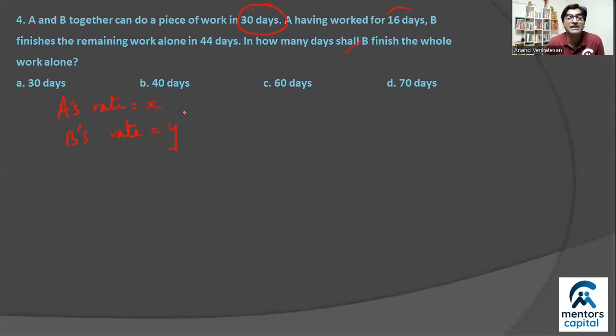So A and B if they work together, they take 30 days, which means A also works for 30 days and B also works for 30 days. Work done by A plus work done by B will be the total work. And so that should be 30x plus 30y. 30x plus 30y will be the work to be completed.